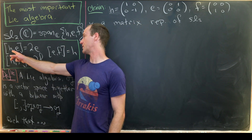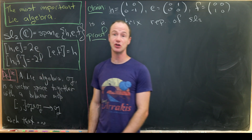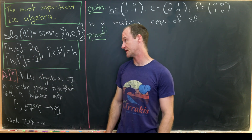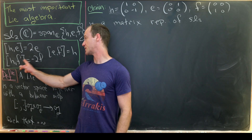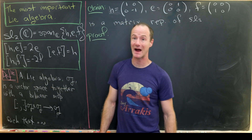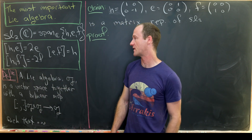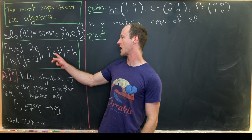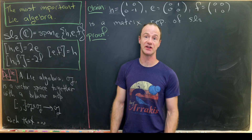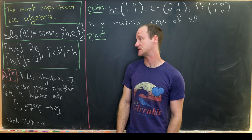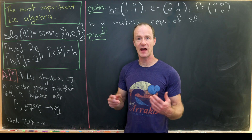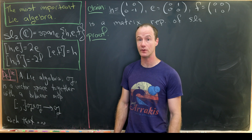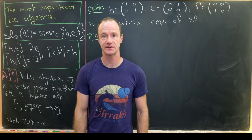If we bracket h with e we get 2e — that's one of our defining relations. If we bracket h with f we get minus 2f — that's another defining relation. And if we bracket e with f we get h — that's our last defining relation. Because of skew symmetry we don't need any other defining relations.